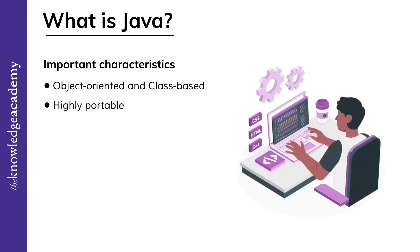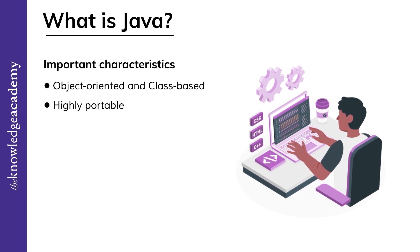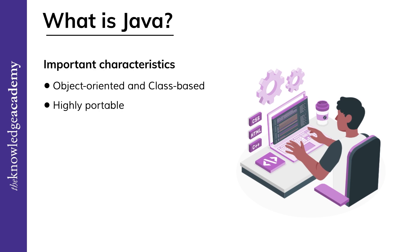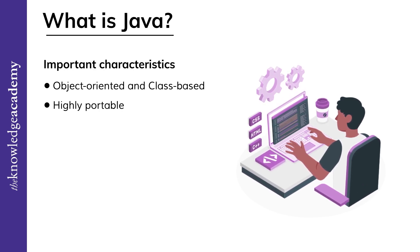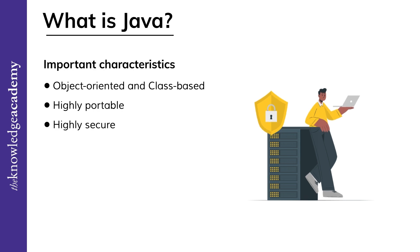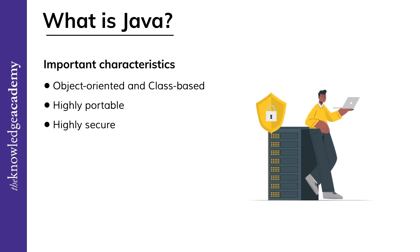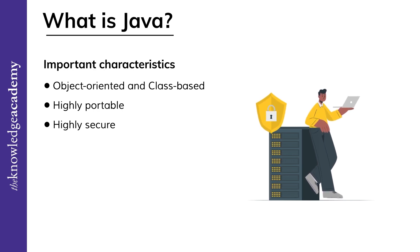Secondly, Java is highly portable. Java operates on the idea of 'write once, use anywhere,' which means that once the code has been written, it can be used on other projects instead of beginning from scratch. Thirdly, Java is highly secure. All Java code is converted into bytecode, which humans cannot read. As a result, this protects your work from unreliable sources and even malicious viruses.